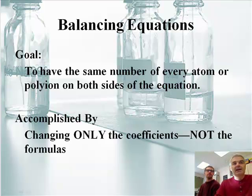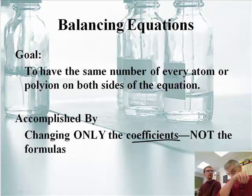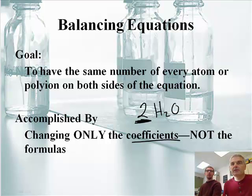It's accomplished by changing only the coefficient. Now, there's a new word, not the formulas. The coefficient, that's the big number that we wrote in front of the chemical compound. So we had two H2Os. That's this number. You never change the formula of the compound. Ever. Once you write it down, it's there for good. You never change it.